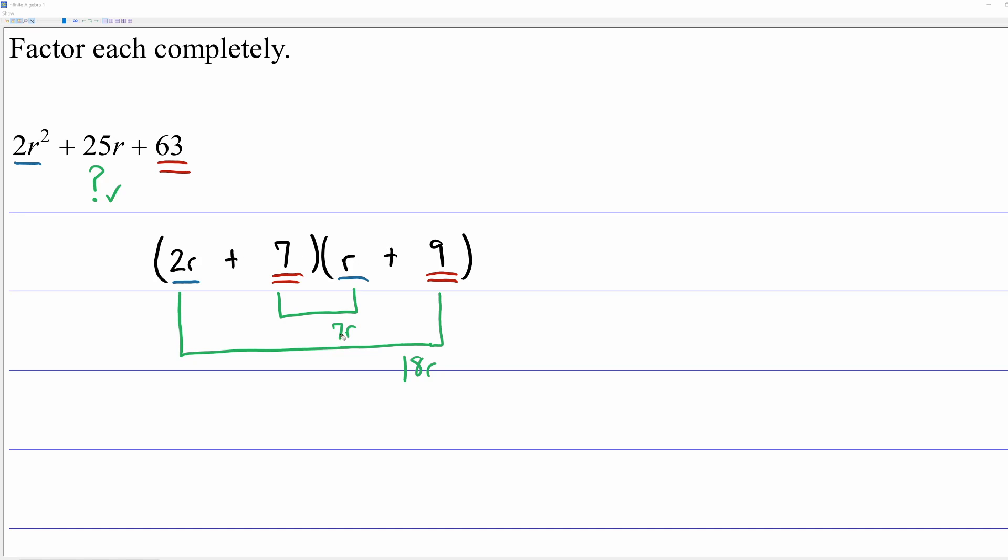If I had gotten anything other than 25r, it would be back to the drawing board. So this is another example of how to factor. Let's do one more. And I'm going to keep my color coding, so give me a moment to erase.